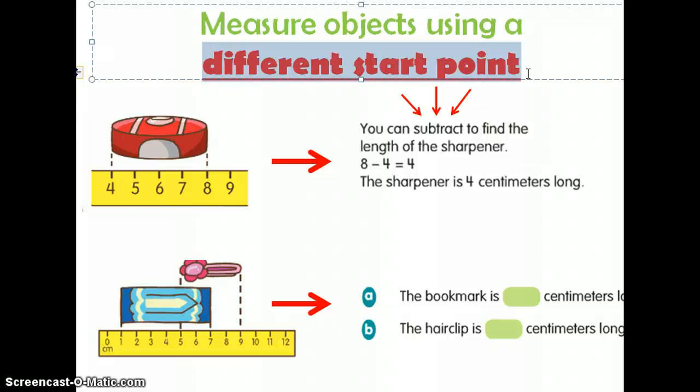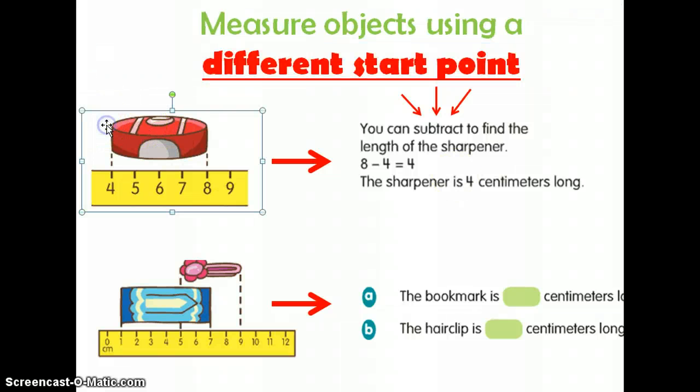But today we're actually going to learn how to measure an object when you can't start at zero. For example, let's say that your ruler is broken. I have an example here. We're measuring this object and the ruler is broken, so they had to start at four. They started at four and the object here shows that it ends at eight. But it doesn't mean that the length of the object is eight.